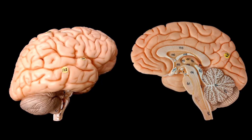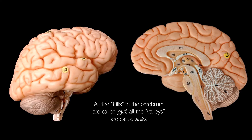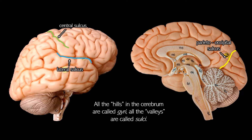The wrinkles and folds in the cerebrum can be used as landmarks to tell the lobes apart. The hill part of the wrinkle is called a gyri. The fold part is called a sulci. The lateral sulcus is pretty easy to spot and it separates the frontal lobe from the temporal lobe. The parieto-occipital sulcus can be seen on the medial surface of the brain, and I think you're going to understand what that separates. Lastly is the central sulcus.